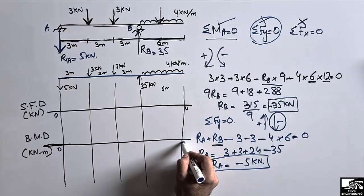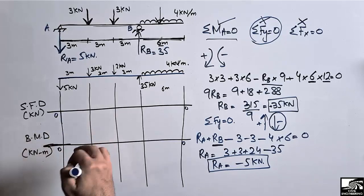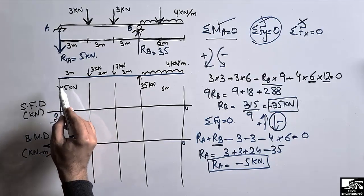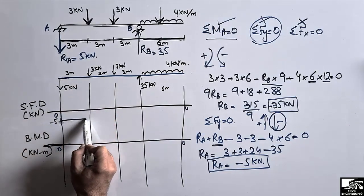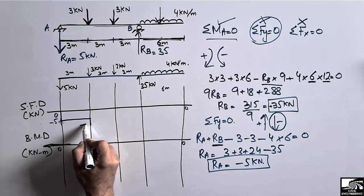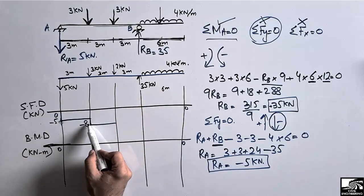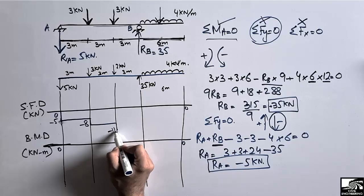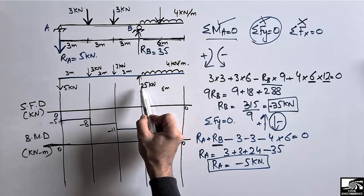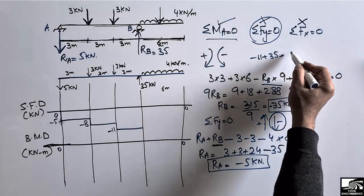Starting the shear force diagram: RA = 5 kN acts downward, so the shear force starts at −5 kN. There is no load for 3 meters, so the shear remains a straight line at −5. At the first 3 kN load, shear drops to −5 − 3 = −8 kN. Again no load for 3 meters (straight line at −8). At the second 3 kN load, shear drops to −8 − 3 = −11 kN. Then the 35 kN upward reaction gives −11 + 35 = +24 kN.